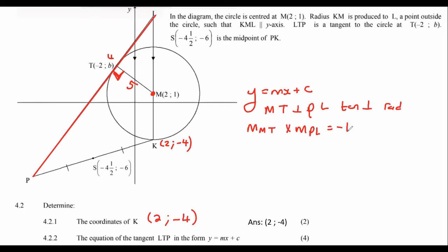And so we know then that the gradient of MT multiplied by the gradient of PL must always give us minus 1. That's just a mathematical thing that we've learned since like grade 9, actually, that when two lines are perpendicular, their gradients, when you multiply them, is minus 1.